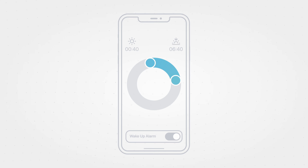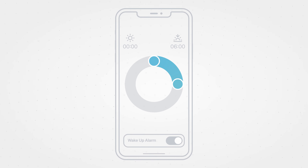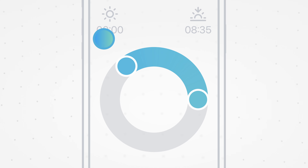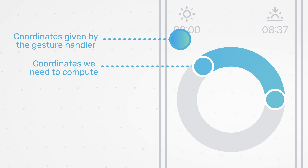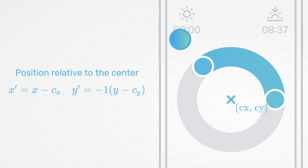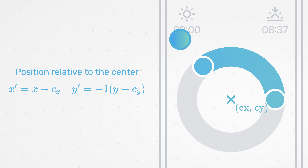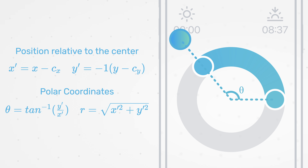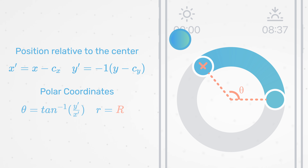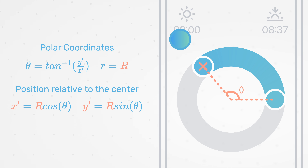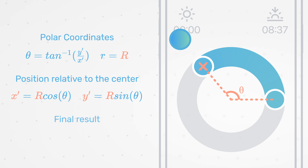I'd like to show you three examples where we can leverage this basic knowledge of trigonometry to build delightful user experiences. Imagine a circular slider where you drag cursors around with your finger to pick a start and end time. From the gesture system we get the position of the finger, and we need to infer the position of the cursor based on that. We convert the x and y coordinates into polar coordinates, then update the radius to be fixed — the cursor always stays along the same circle — and finally convert back to canvas coordinates.